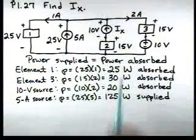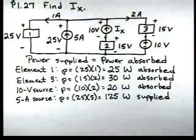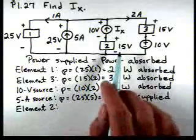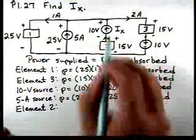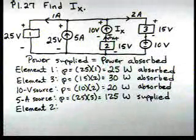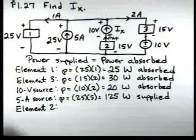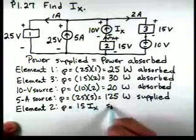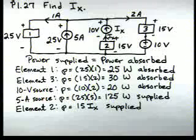Now let's look at element two and the Ix current source. For element two, the voltage across that element is 15 volts, and because of the current source the current flowing is Ix. If we look at the voltage and current for element two, they satisfy the passive sign convention — meaning this element is actually supplying power. The power supplied by element two is 15 times Ix.